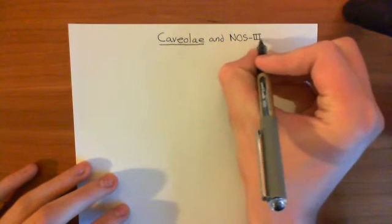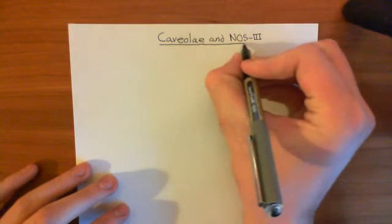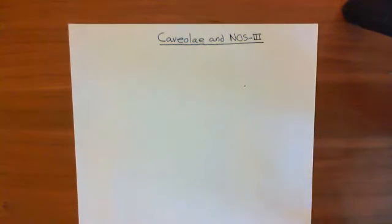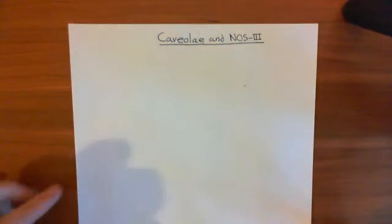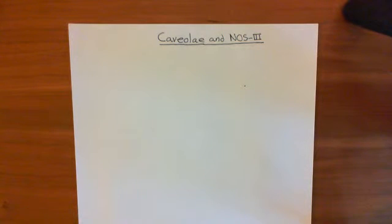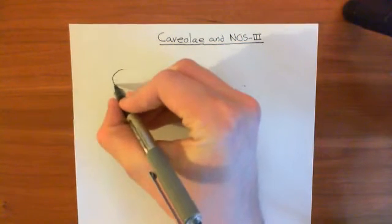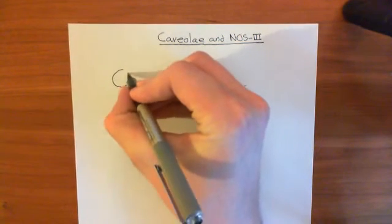NOS3 is also called eNOS, or endothelial nitric oxide synthase. So we'll start with a little revision about the structure of NOS3. A NOS3 enzyme consists of two NOS3 proteins bound together in a homodimer, and its structure is often shown like so — you draw two oxygenase domains.